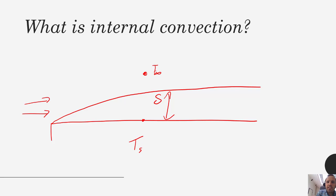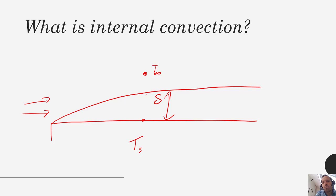In external convection, we had heat transfer going from T_s to T_infinity. This boundary layer is bounded at some thickness, and we're talking about transfer of heat from T_s through that boundary layer up into this effectively infinite fluid.